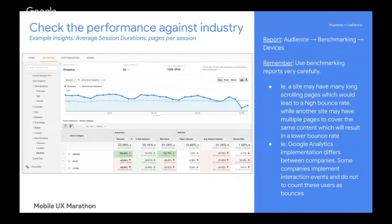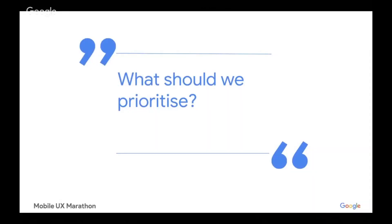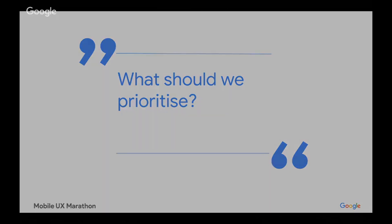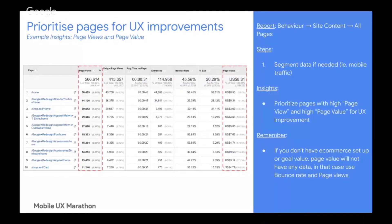Now that we've answered whether mobile is important — which it is — the second question is: what should we prioritize? We know that resources and efforts are limited, so which parts, segments, or dimensions should we begin with? We look at three reports. The first report to help answer this question is prioritizing pages for UX improvement.